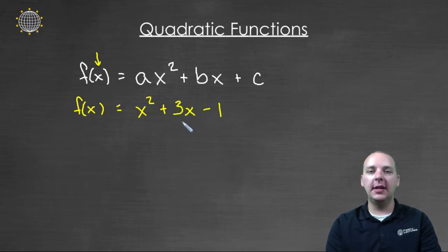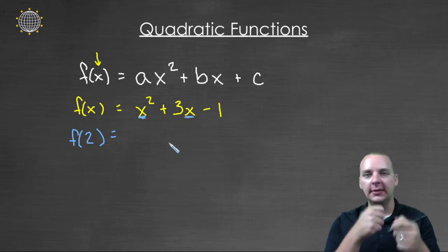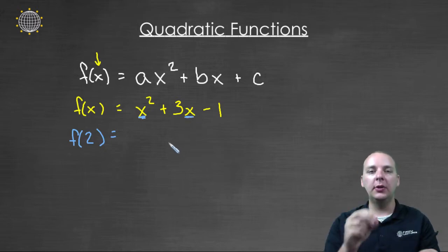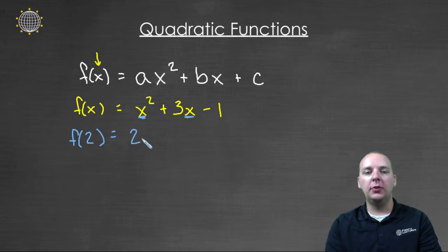Then this would be an example of a quadratic function, and you might be asked to evaluate this quadratic function. That's a very popular exercise. So for example, if you were asked to find f of two, then what that means is for every x in your quadratic function, you're going to take those x's out and replace them with two. So we'd have two squared plus three times two minus one, and that's going to give you a numerical value.